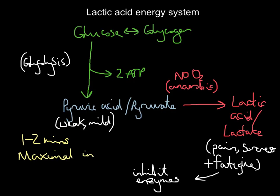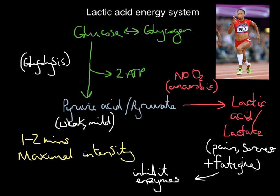You use this system when working at maximal intensity — up to two minutes at maximal intensity. For example, Alison Felix is a 400-meter runner who uses her lactic acid system a lot. After the first 10 seconds she uses her ATP-PC system, then moves into her lactic acid system. Other athletes like 800-meter runners, 200-meter swimmers, and 200-meter runners also rely on this system — if you're working maximally for longer than 10 seconds, you are going to use the lactic acid energy system.